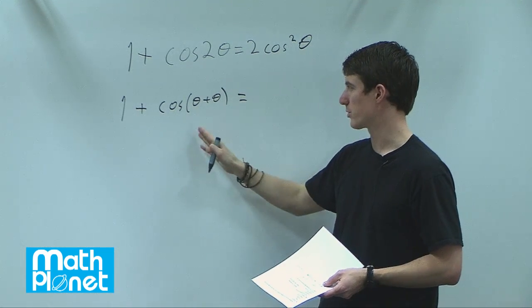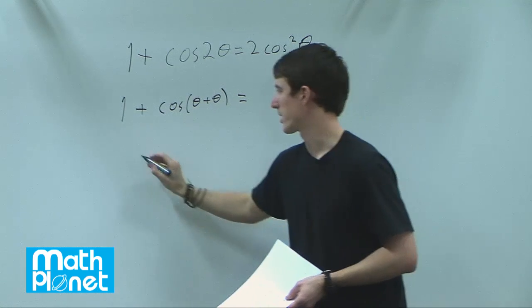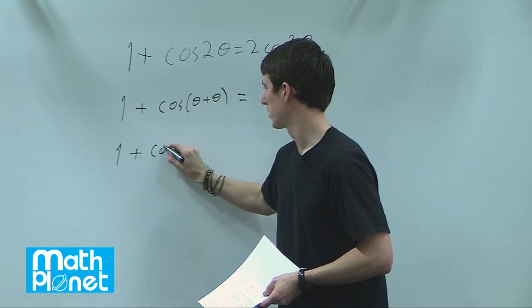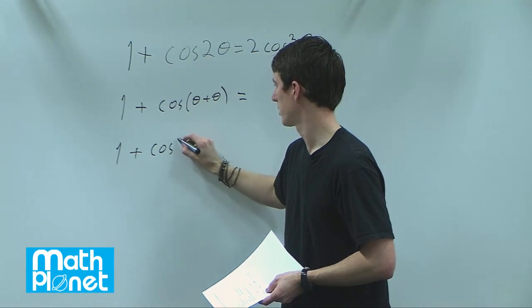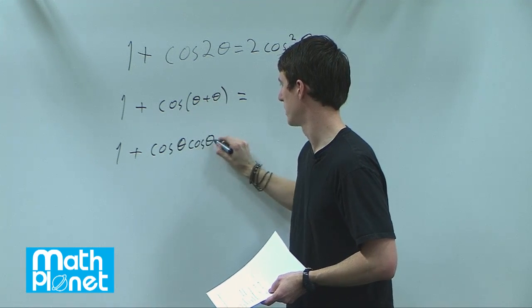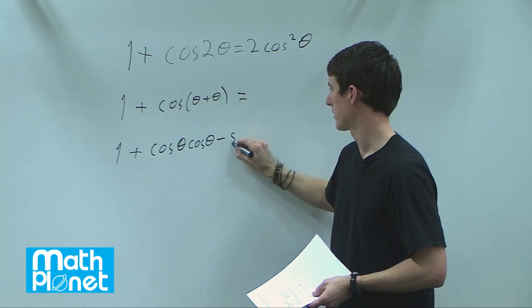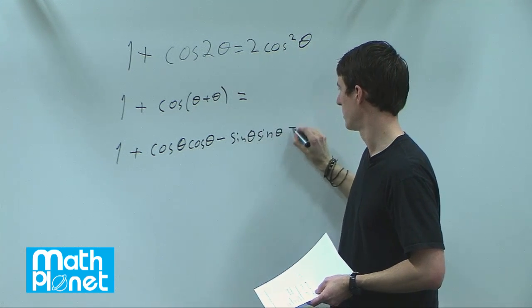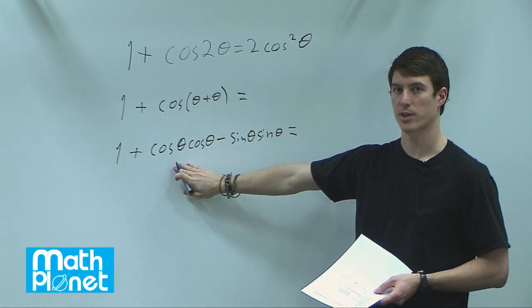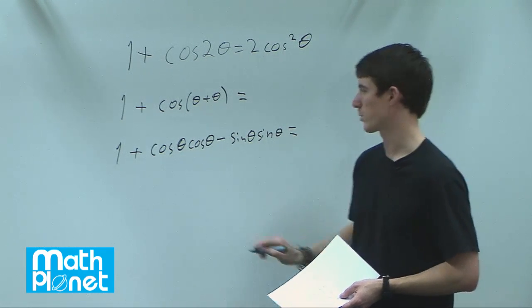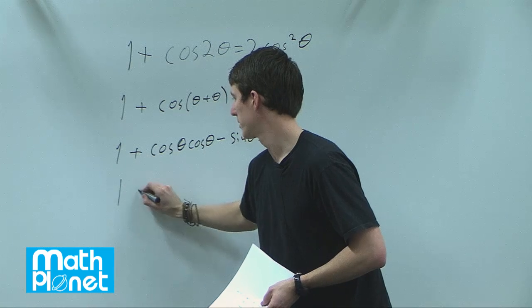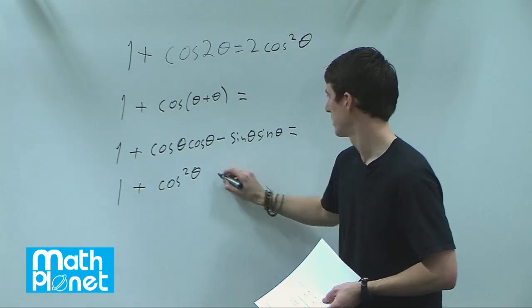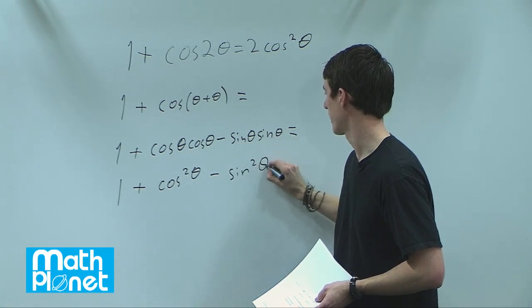Then what we can do here is use the law of additions, which says that this, so this is still 1, plus, this can be written as cosine theta times cosine theta minus sine theta times sine theta, which is of course cosine squared theta minus sine squared theta. So 1 plus cosine squared theta minus sine squared theta.